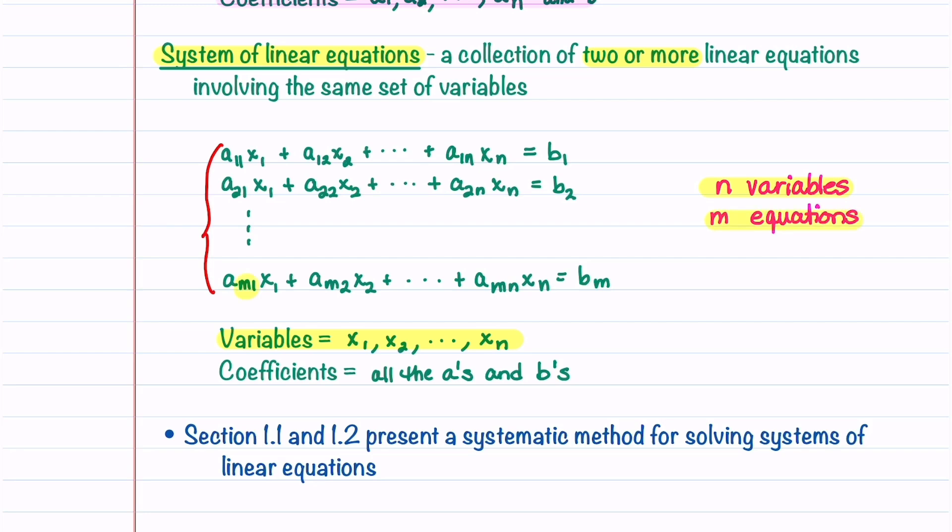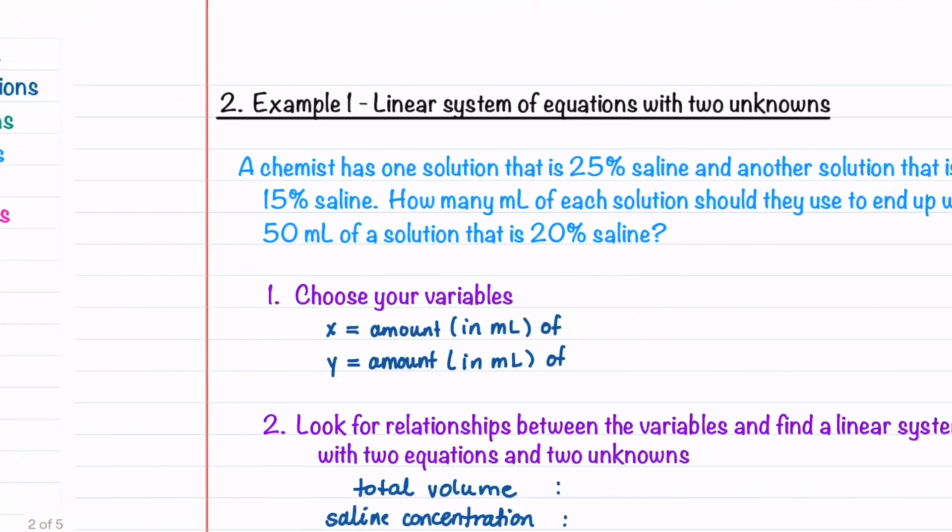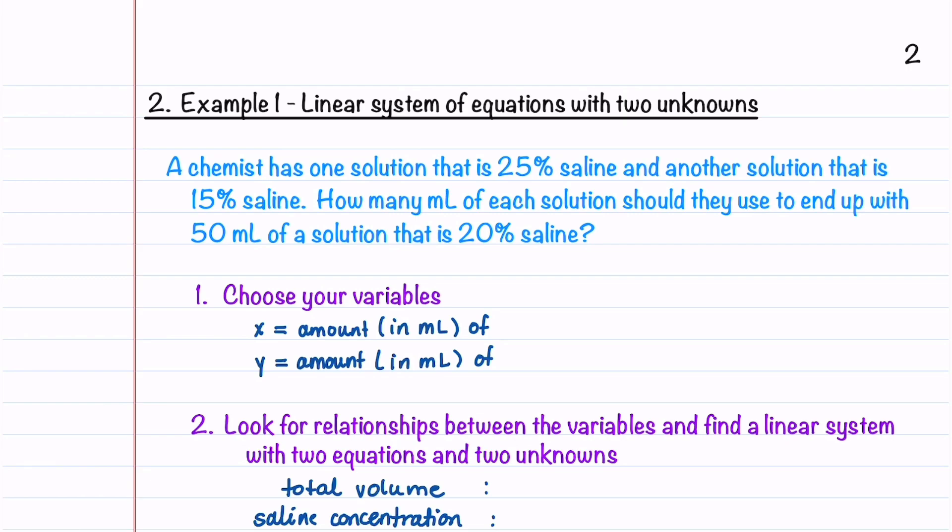The coefficients are all the a's and all the b's. In Section 1.1 and 1.2, we'll go over a systematic method for solving systems of linear equations just like this. Let's now look at two example problems.